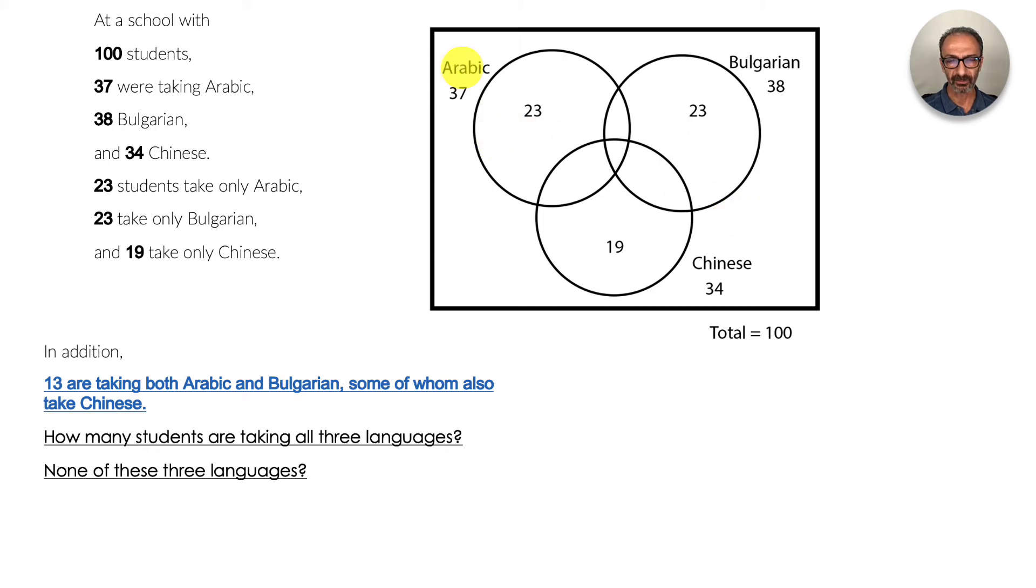If you look at the 37, we have 23 right here, but we know that 13 are referring to this section. So if you do some math, 23 and 13 adds up to 36, but the total should be 37, so I'm missing 1.